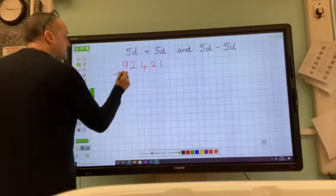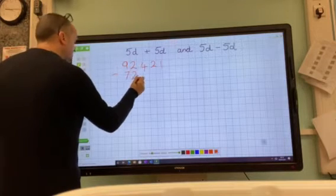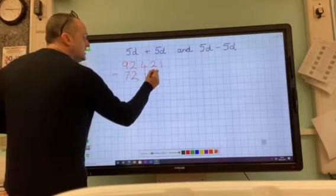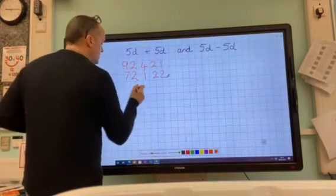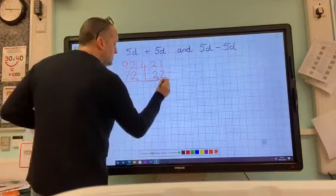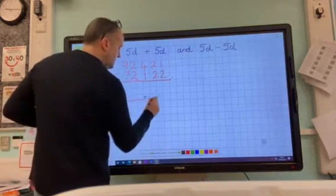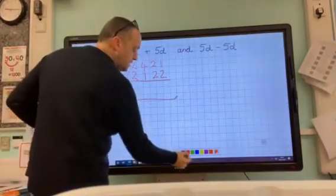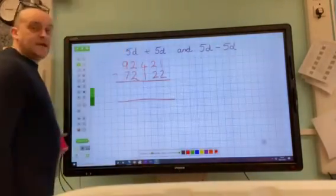Taking away 72,122. Again, using a ruler, simply because I am that awesome. I'm going to use red because I'm going to work it out in my head.